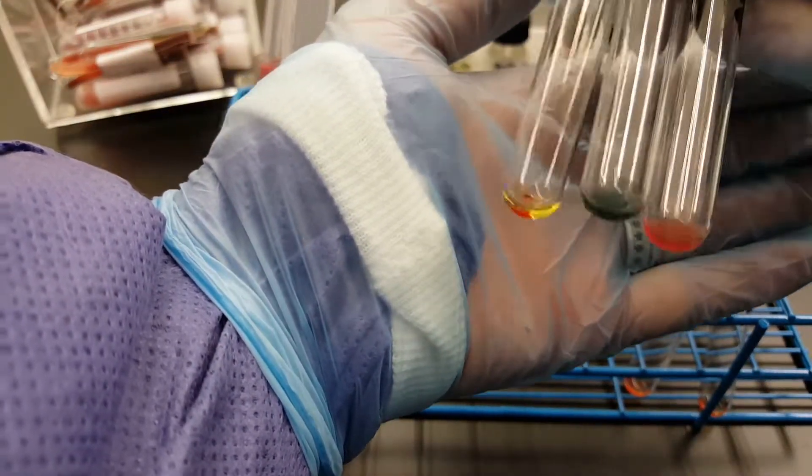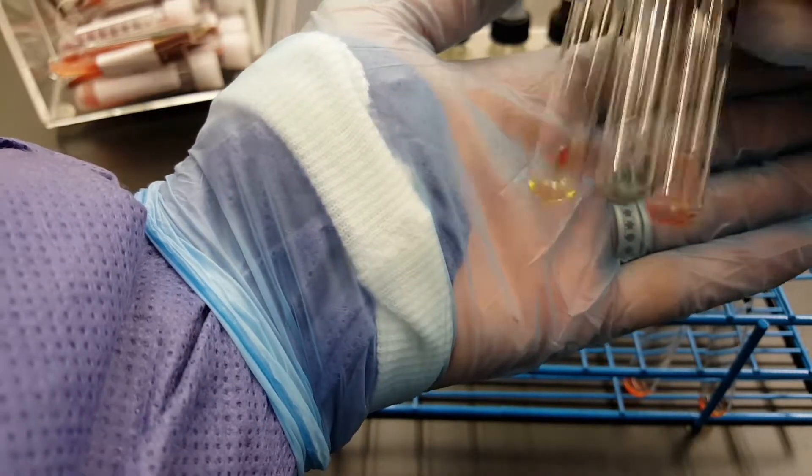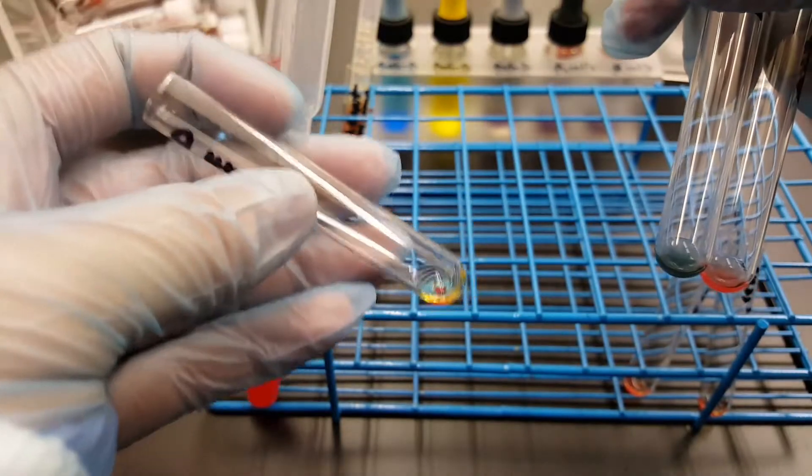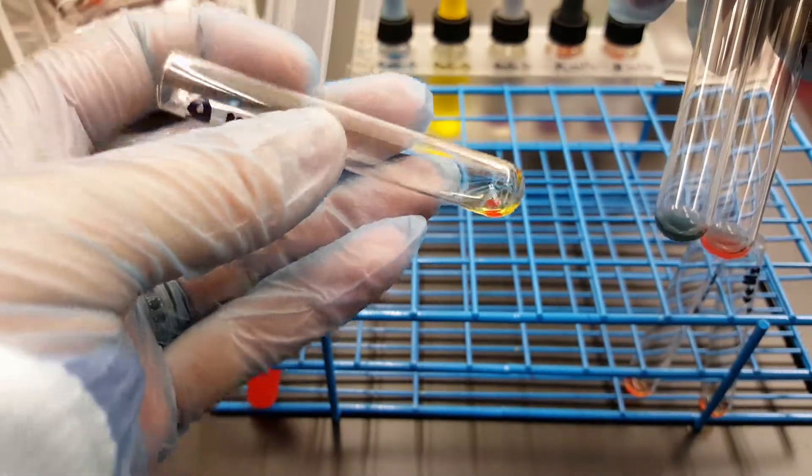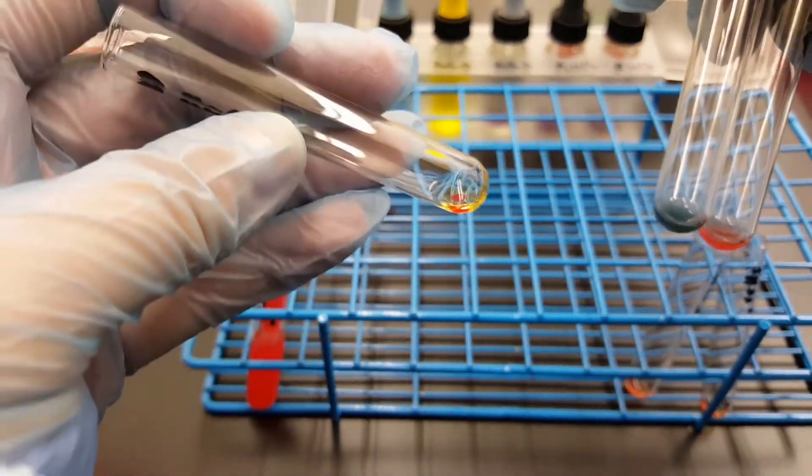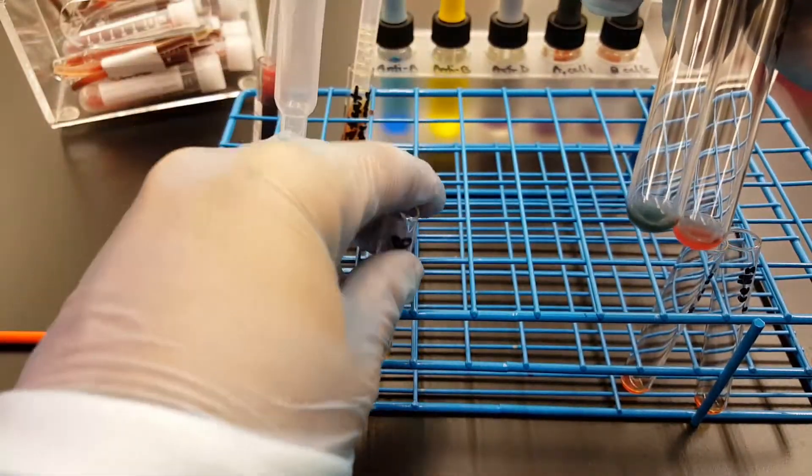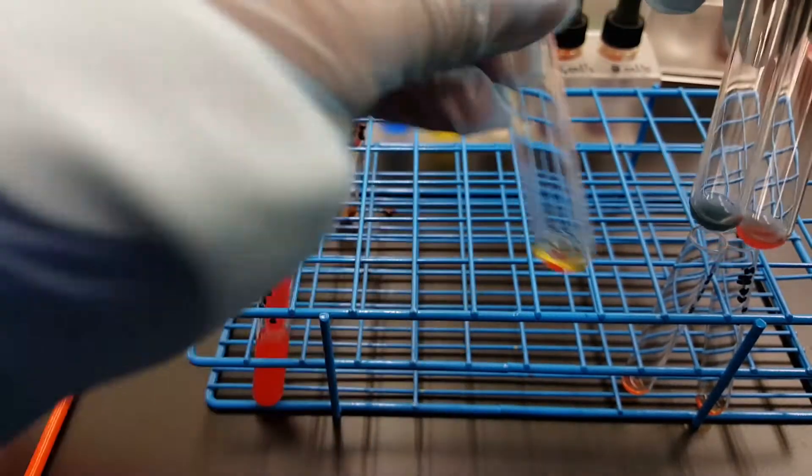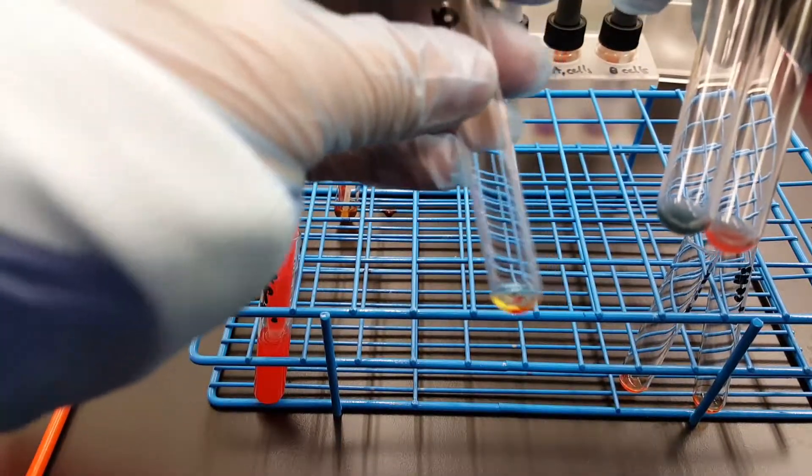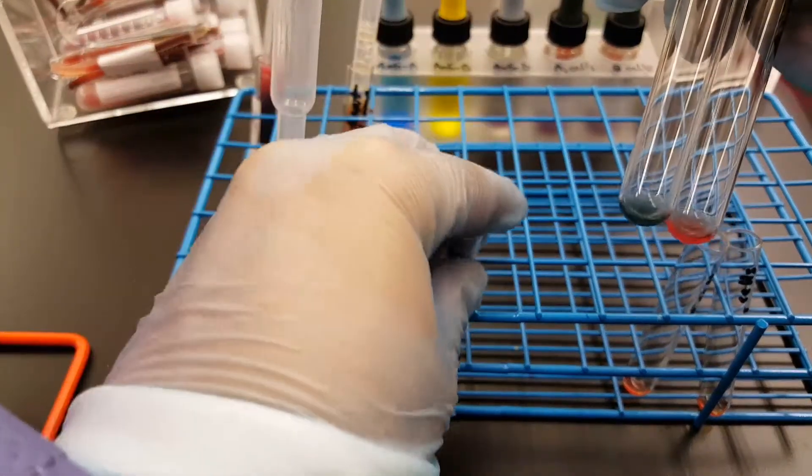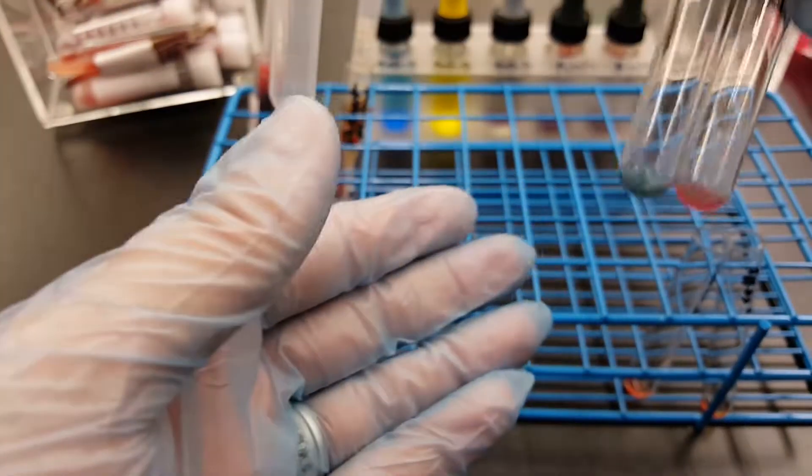And if you'll notice, the A is continuing to have a really big button, so we're going to think that this person is A... I'm sorry, that's B. The B is very prominent and so we're thinking that the reaction is going to be B something, because it doesn't look like the A has any agglutination at all.